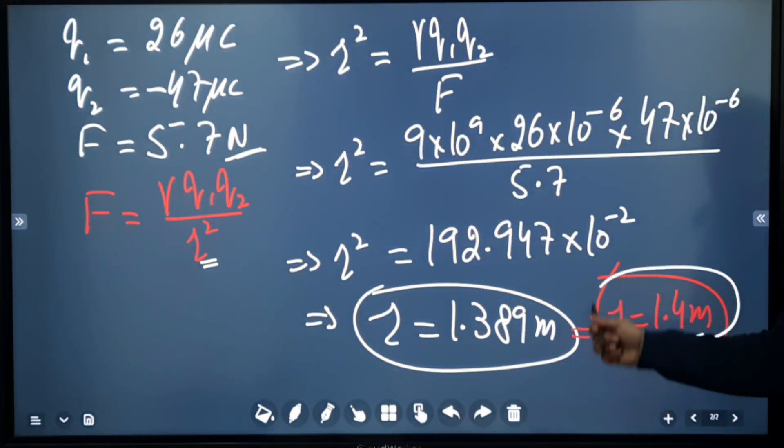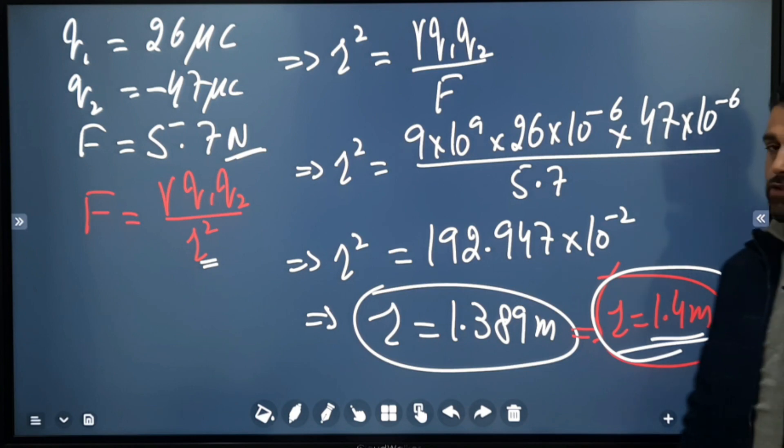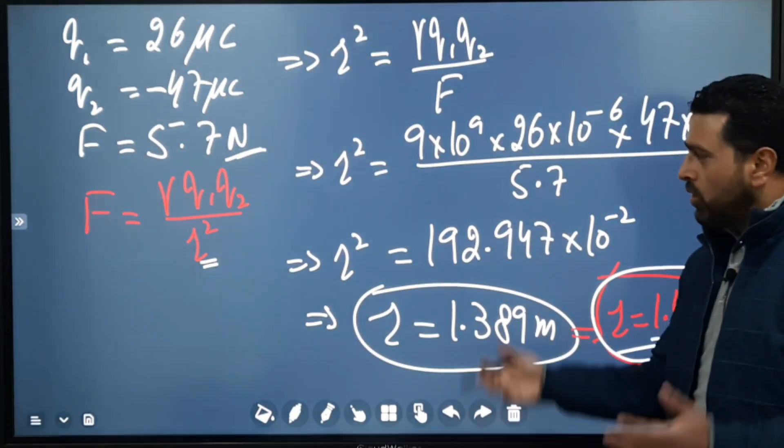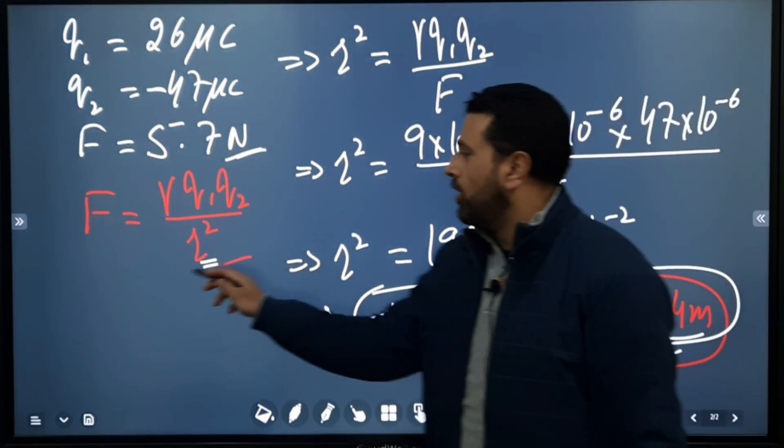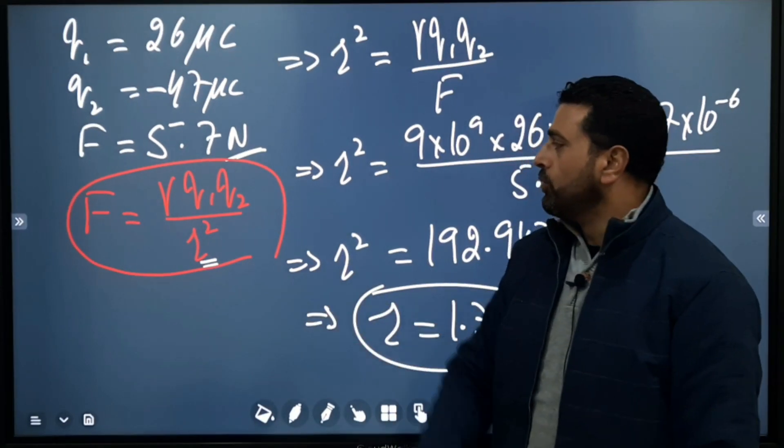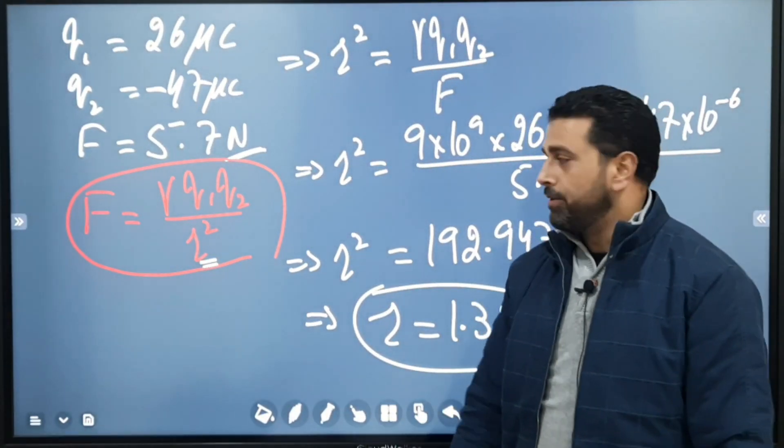So distance between the two charges is 1.4 meters. Very simple application of Coulomb's Law: gamma q1 q2 divided by r².